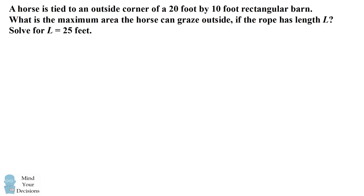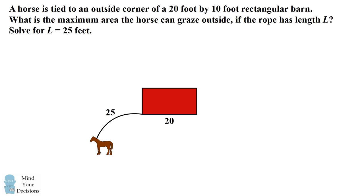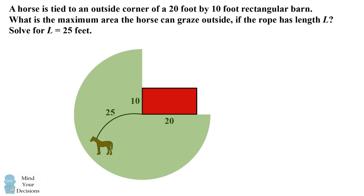Now let's tackle the next case of L equals 25 feet. The problem starts out similarly where the horse can graze a 3 quarters circle where the radius is equal to the length of the rope. But in this case, there is a difference. The horse actually has leftover rope after walking along one side of the barn. So when the horse is going along the side of the barn that has 10 feet, there's actually 15 feet of rope left over, so the horse can graze another quarter circle around this wall. Similarly, for the barn which has a 20 foot wall, there will be 5 feet of rope left over, so the horse can graze another quarter circle of 5 feet around this corner.